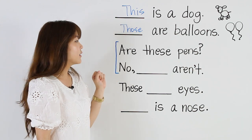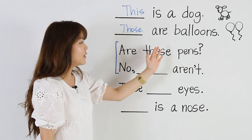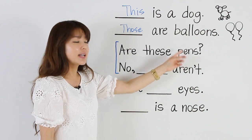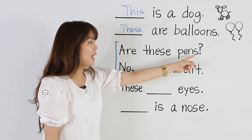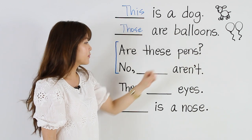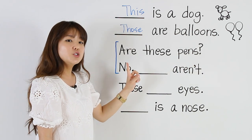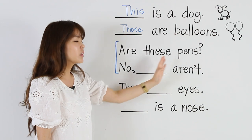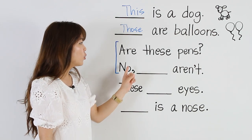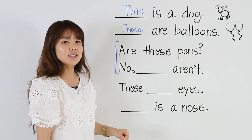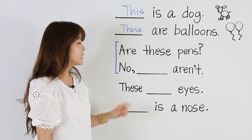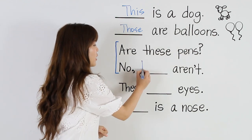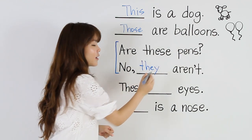Now, when we ask the question 'Are these pens?' — we have more than one, these pens with an S. I can put two answers here. I can say, 'No, these aren't.' Or I can say, 'No, they aren't' — 'they' for more than one.